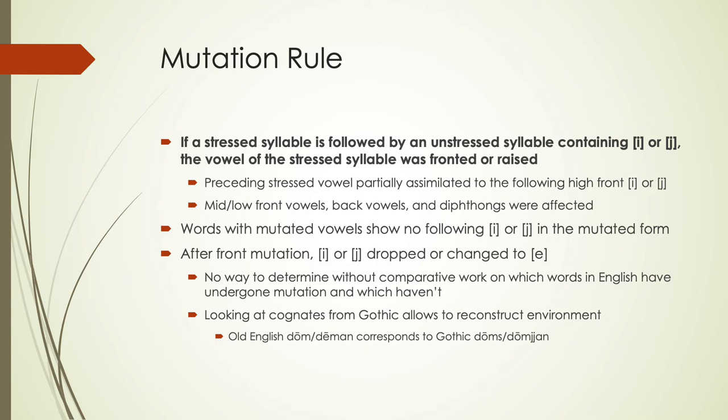Gothic is one of the languages through comparative analysis that helps identify this change. In Old English, we have 'dom' and 'dæman,' which corresponds with Gothic 'domes' and 'domjan.' The Gothic second example did not undergo this change, but we see it having occurred in Old English. Through comparative work, we see lots of patterns of this happening, and we can come up with a pattern for what kind of changes are actually taking place.